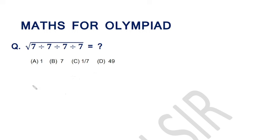Namaskar, this is the 25th video of this series, Maths for Olympiad. Today's question is: the square root of 7 divide 7 divide 7 divide 7 equals what? The given options are 1, 7, 1 over 7,